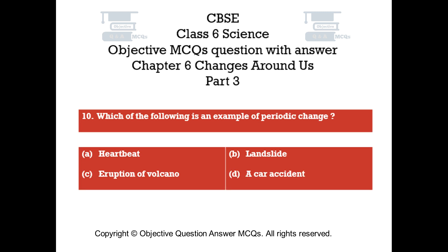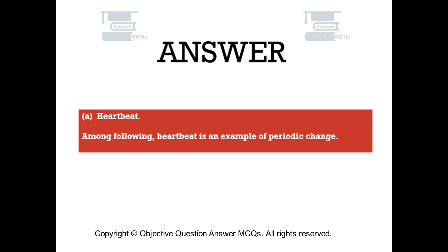Question number 10. Which of the following is an example of periodic change? Option C, eruption of volcano. Option D, a car accident. The right answer is option A — heartbeat. Among the following, heartbeat is an example of periodic change.